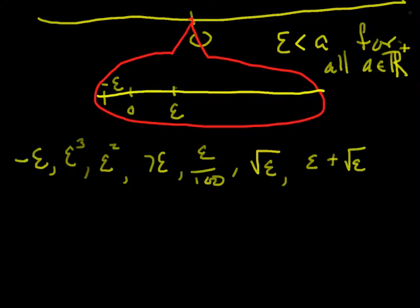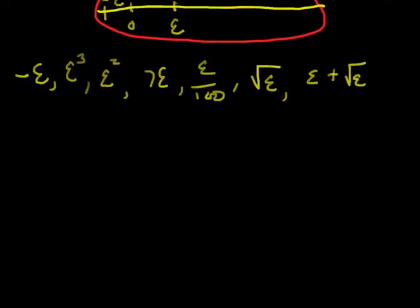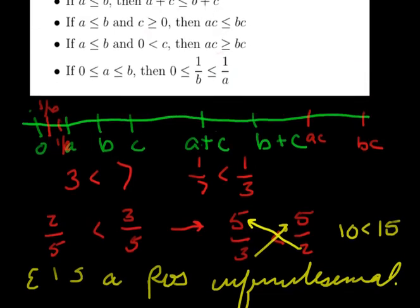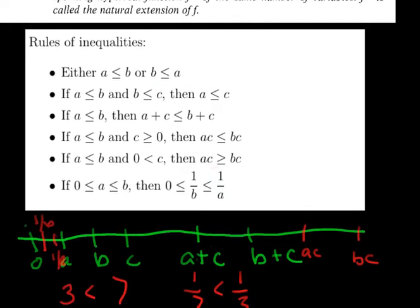So we know that epsilon is positive, and we also know it's an infinitesimal. So those two facts tell us that epsilon is less than every real number, so in particular it's less than one. And we know that epsilon is positive. Now, back to our rules: if I have A less than B and C is positive, then I can multiply both sides and preserve that inequality.